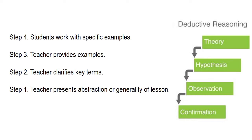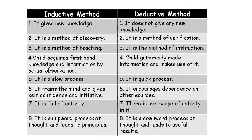In deductive teaching, advanced organizers and deductive teaching each proceed from general to specific. In this deductive method, we have four steps. Step one: an advance organizer helps to provide a foundation before the teacher presents the abstraction or generality of a lesson. Step two: the teacher clarifies key terms. Step three: the teacher provides examples. Step four: students work with specific examples.